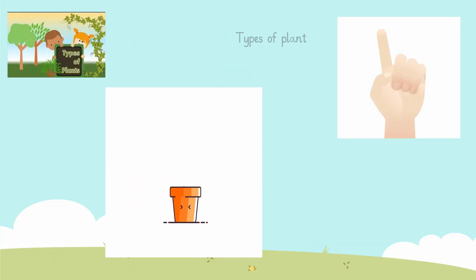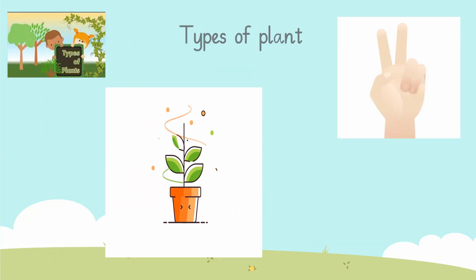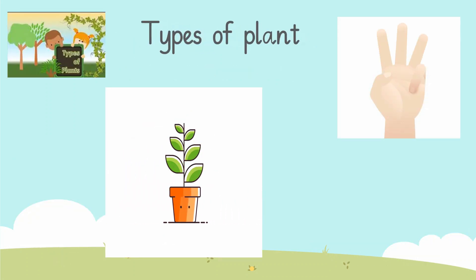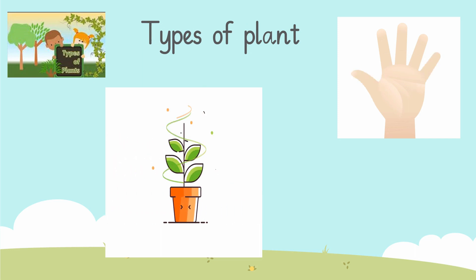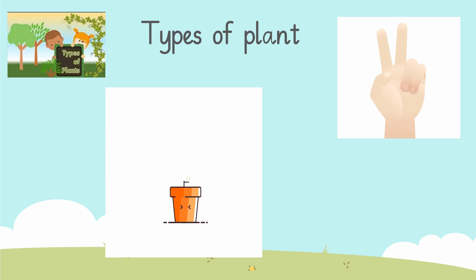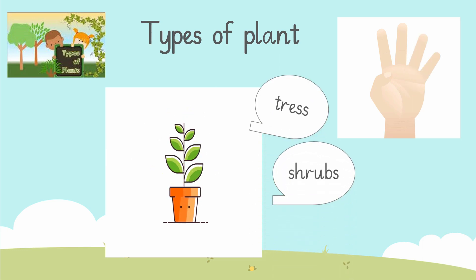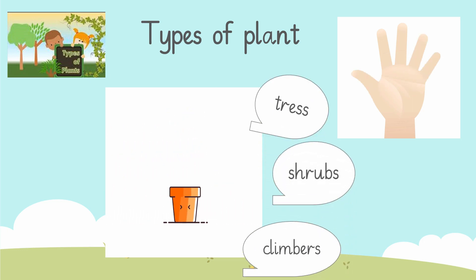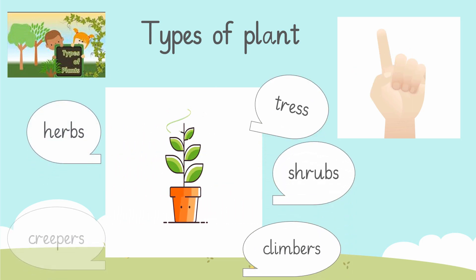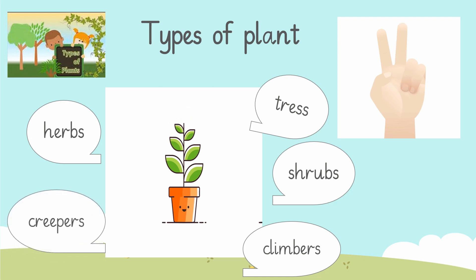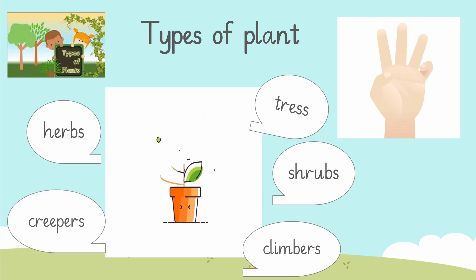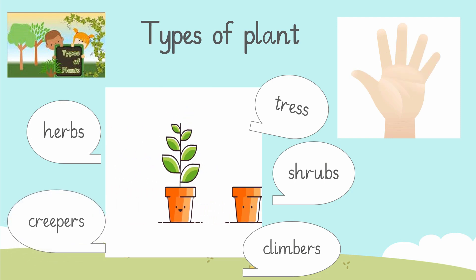Some are very tall like trees and some are very small like bushes. Let's learn about the types of plants. There are different types of plants around us — trees, shrubs, climbers, herbs, and creepers are the different types of plants.